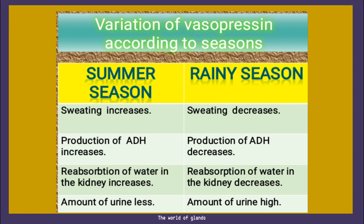During rainy season or cold climatic conditions, sweating decreases. So production of ADH also decreases, reabsorption of water in the kidney decreases, and the amount of urine will be high. That is why we have a temptation to pass urine frequently during rainy season — because sweating is very less, majority of water is lost in the form of urine. So during summer, water loss is in the form of sweat; during rainy or cold conditions, it is in the form of urine. The hormone that plays a key role in maintaining water level in blood is ADH or vasopressin.